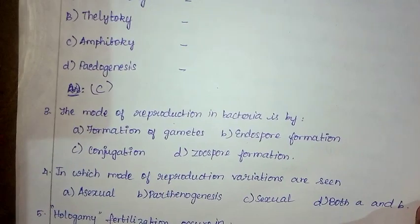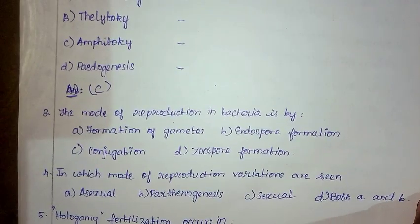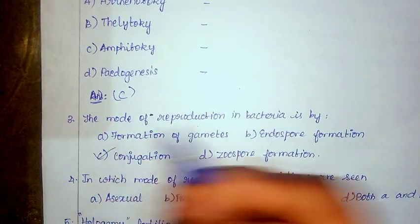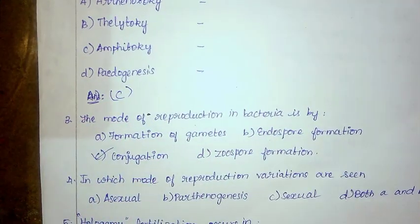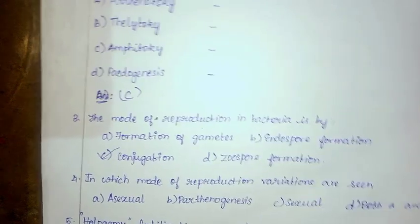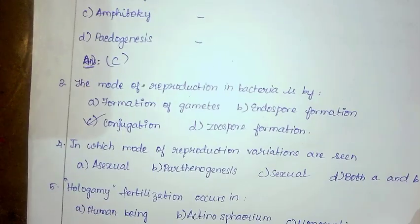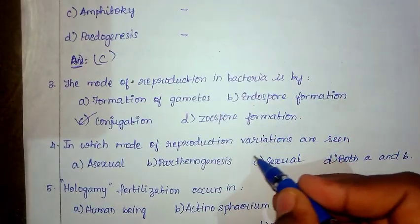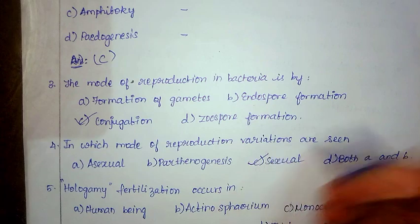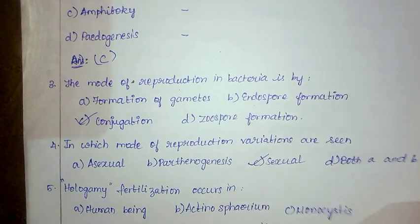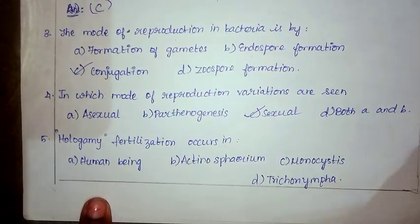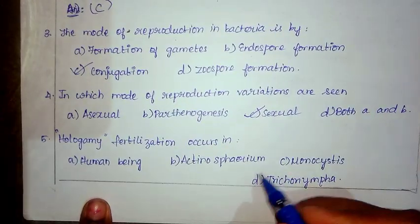For the third question, the correct option is C, conjugation. For the fourth question, the correct answer is option C, sexual. For the fifth question, the correct option is D, Trichomonas.